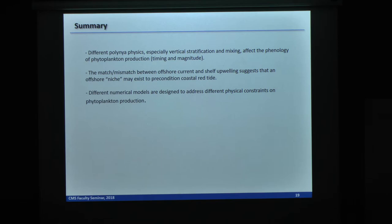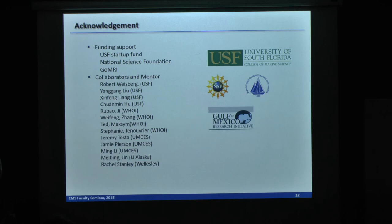And as a summary, so I think I'm a little bit over, so different phytoplankton are indeed controlled by the physics. Mainly, this physics is along the vertical dimension by stratification and mixing. And also, I hope I convinced you that there could be an offshore niche of the bloom as a precondition for the coastal bloom. And also, there are different models that could be prescribed to different physical constraints on phytoplankton.